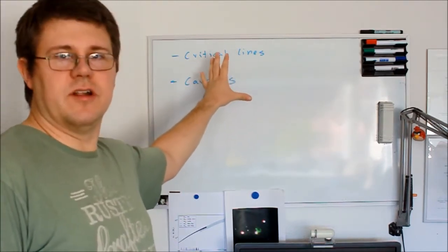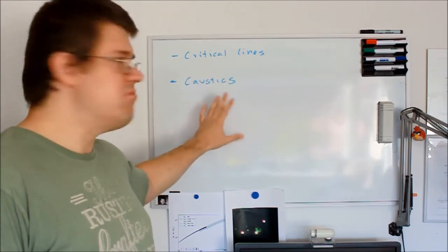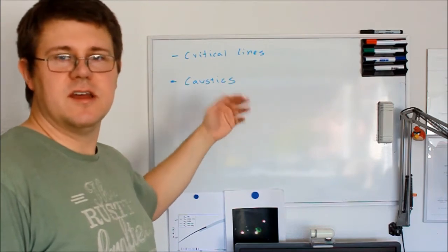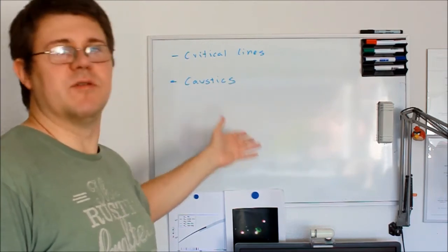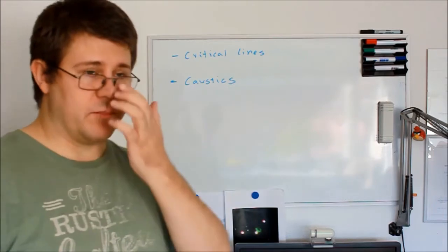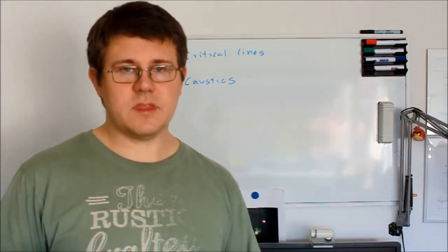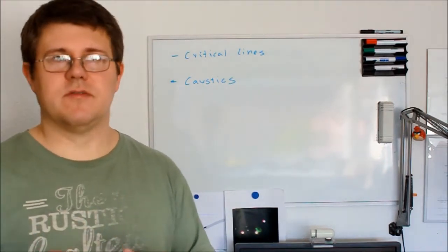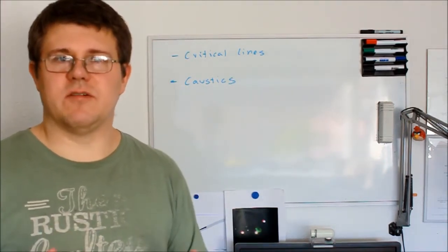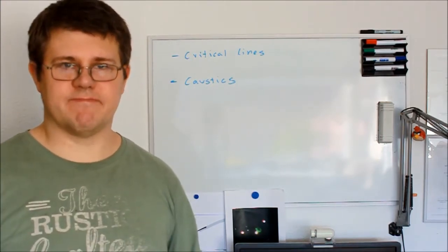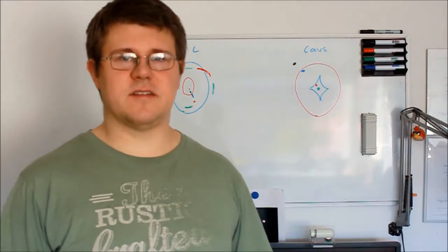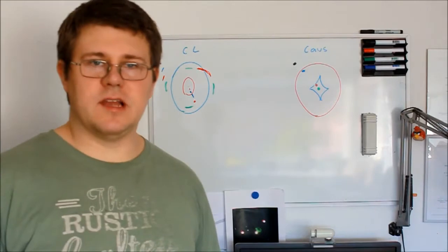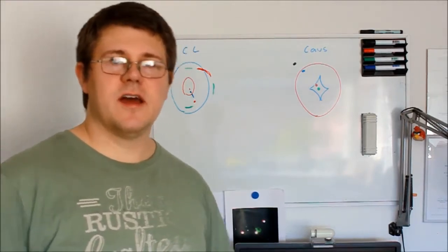These two concepts are connected to each other as I will show later on. First I would like to talk about some general considerations about critical lines and caustics, and then I will introduce a bit of math to explain how these things work. Let's start by discussing what critical lines and caustics are, and how they are connected.